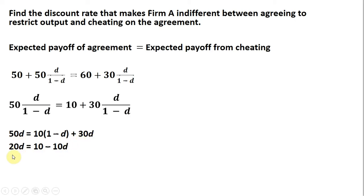Simplifying further, subtracting 30D from both sides, we get this. Then adding 10D to both sides. And then finally dividing through by 30, the discount rate at which the firm will be indifferent between cheating on the agreement or abiding by the agreement is one-third.